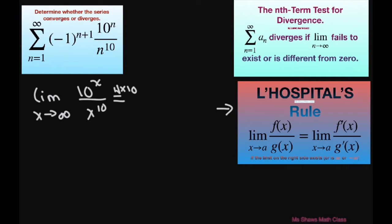this will give you (ln 10)^10, because you did it 10 times, times 10^x. And in the denominator, you're just going to get 10 factorial. So that would be using L'Hopital's rule 10 times.